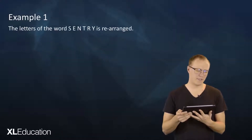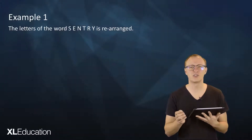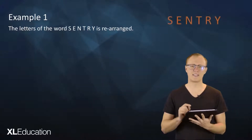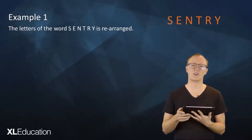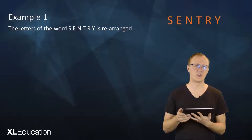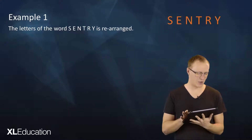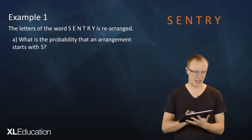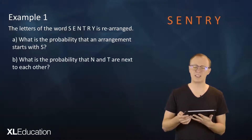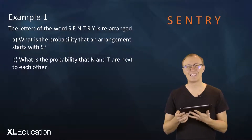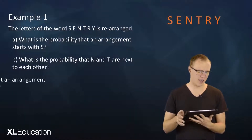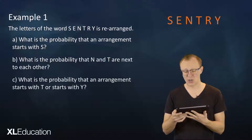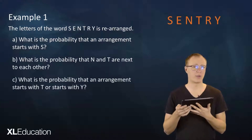Example one: the letters of the word 'century' are rearranged. It's a six-letter word and all of those letters are unique — there are no duplicates. The questions are: what is the probability that an arrangement starts with S? What is the probability that N and T are next to each other? And what is the probability that an arrangement starts with T or starts with Y?